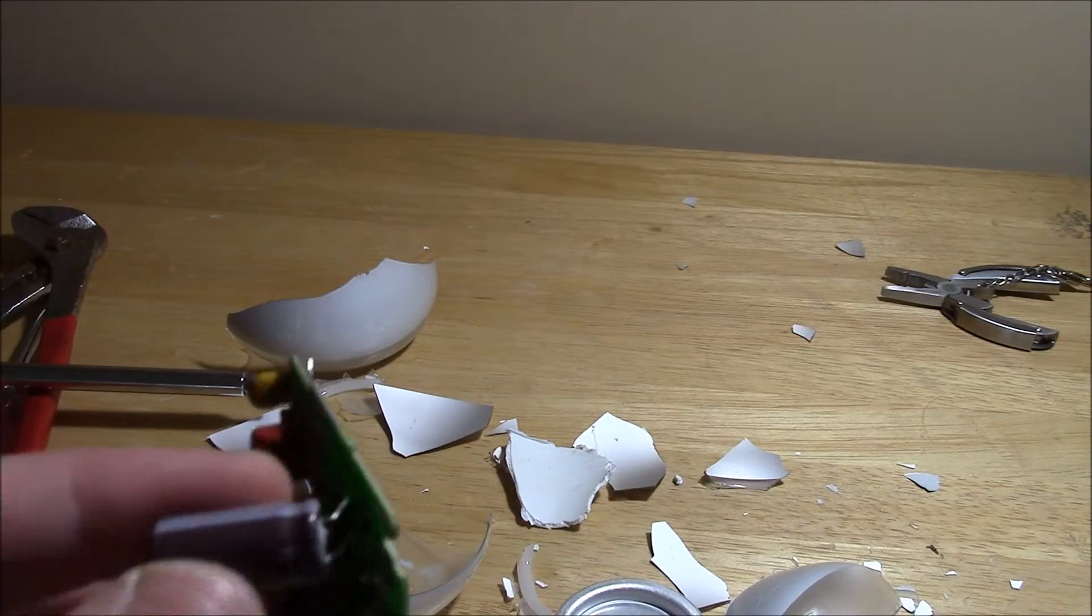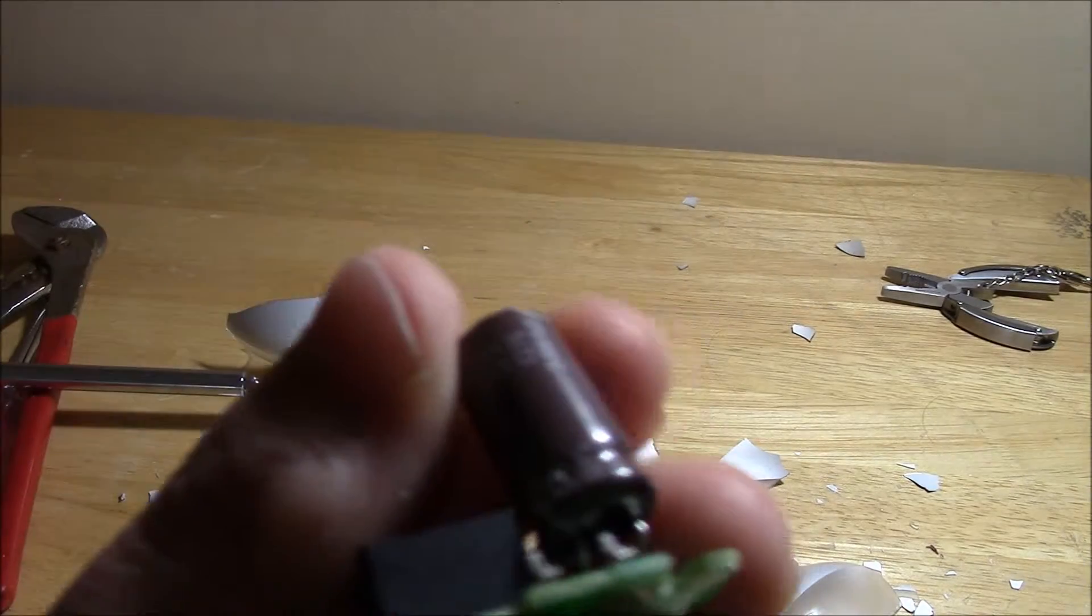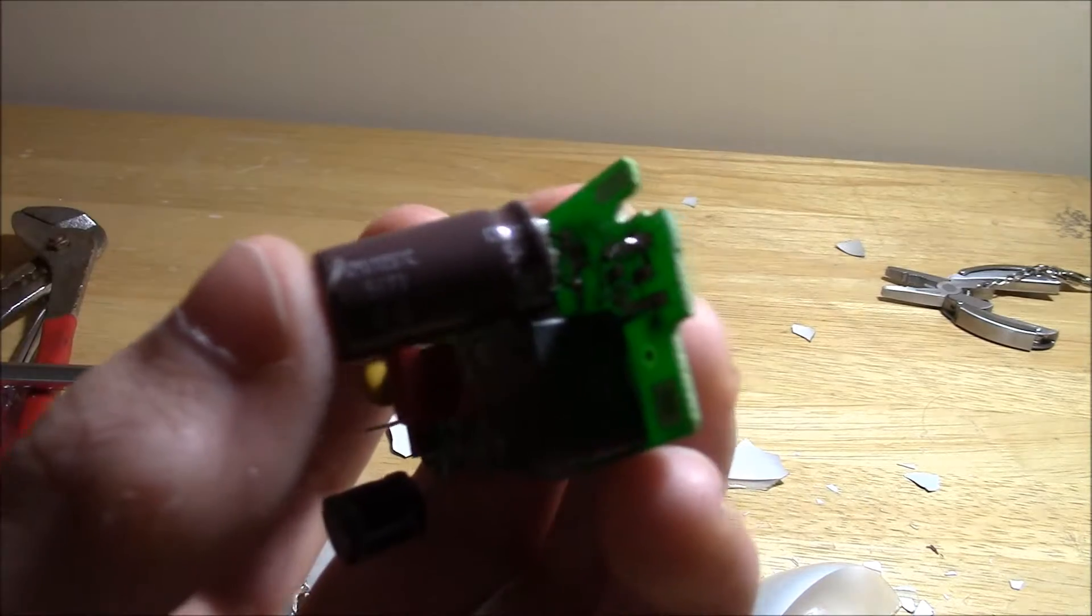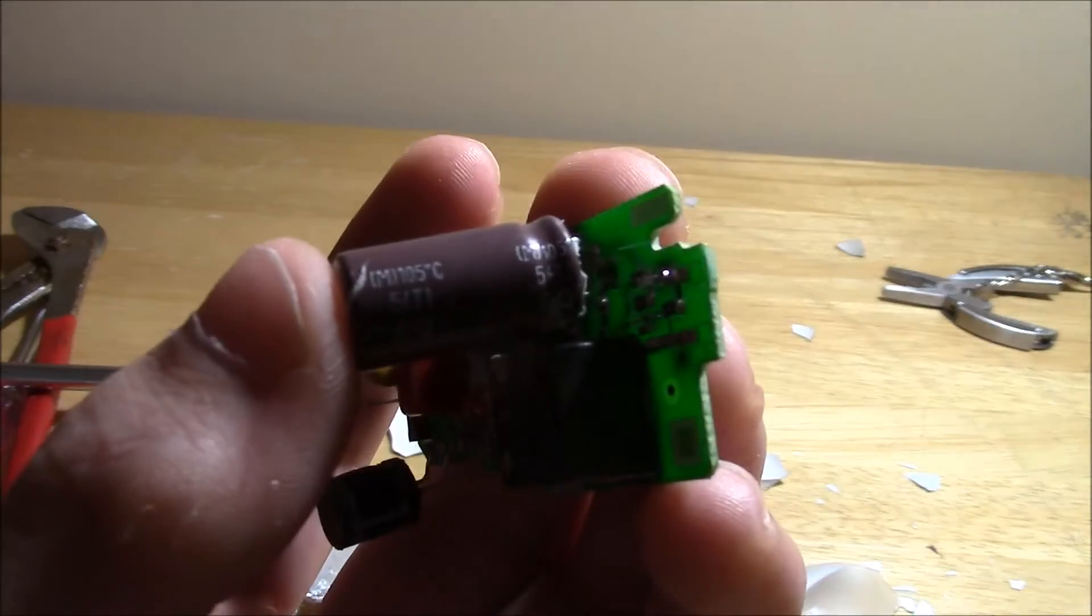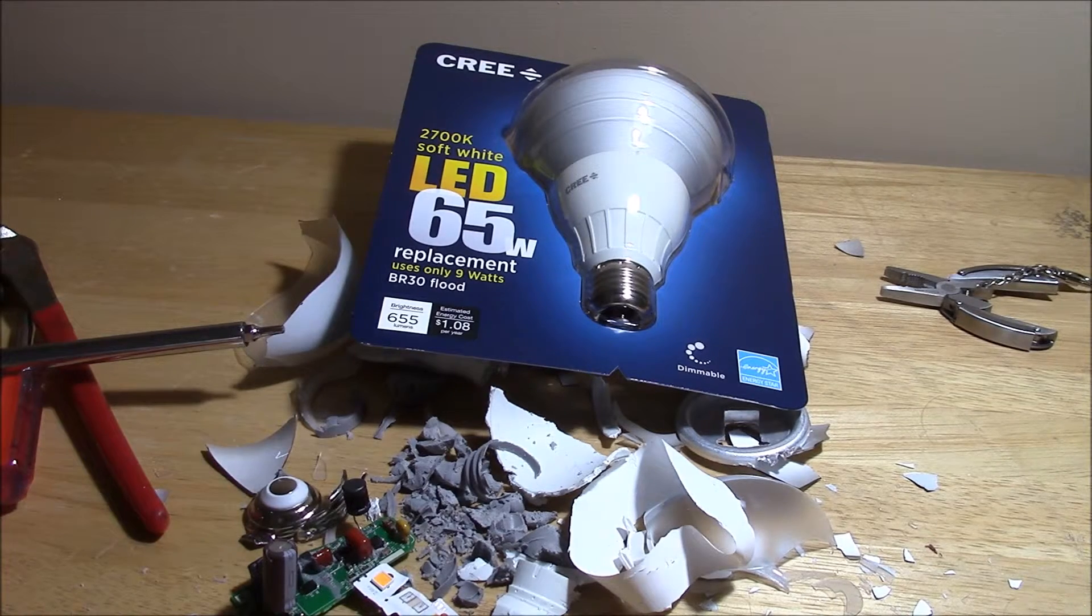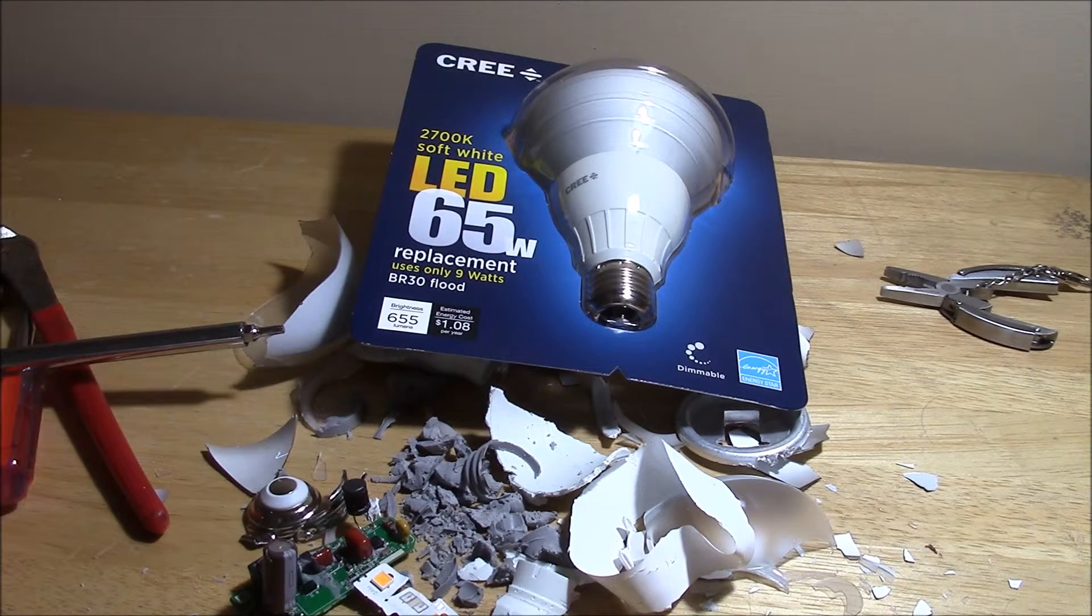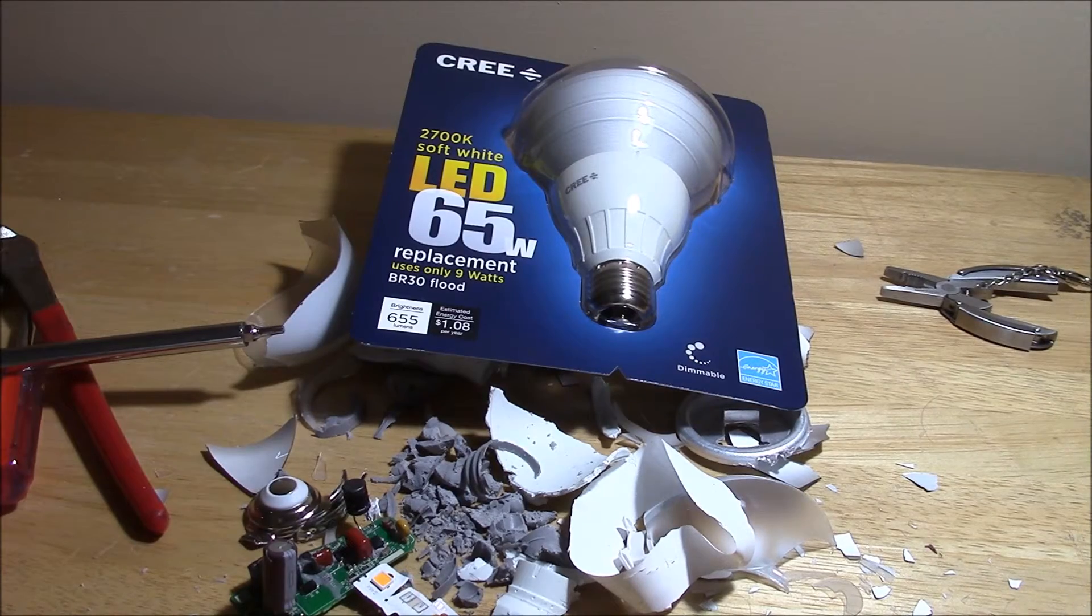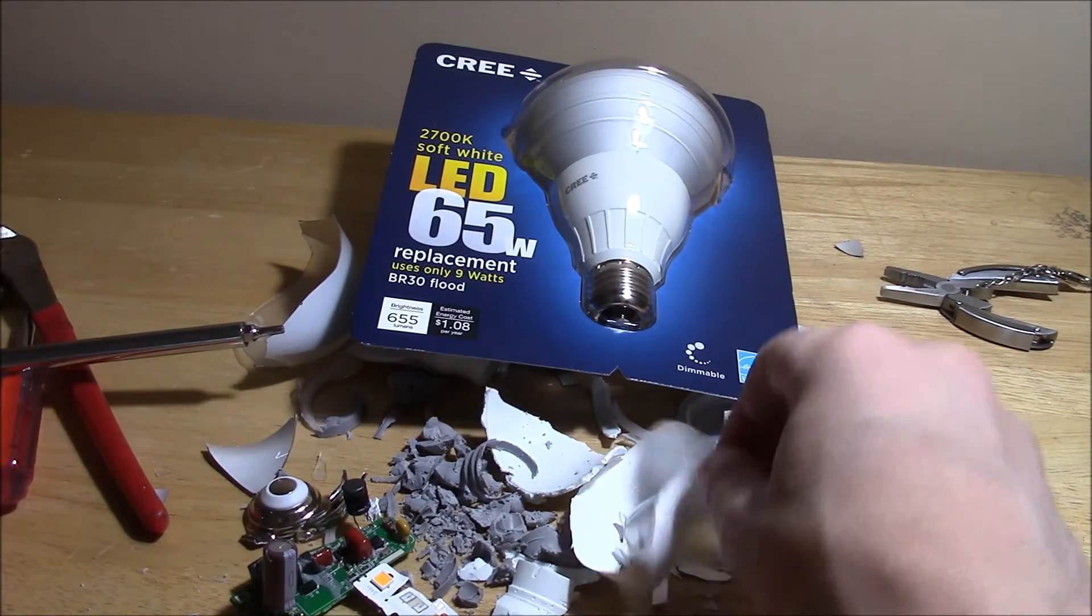One thing I forgot to mention - the capacitor on this is rated for 105 degrees Celsius. That's what's inside the new Cree BR-30 bulb. It's turned out to be quite a bit of a mess.